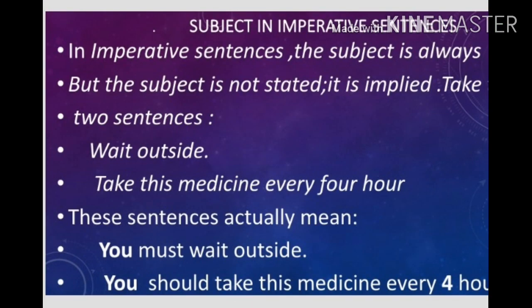Here we can see, in imperative sentences, the subject is always you, but it is implied as I told you earlier. Look at these two sentences. The first says, Wait outside. Second, Take this medicine every four hours. These sentences actually mean what? Here, in the first part, you can see that you is not written, but it is implied. Implied means hidden. We can write these sentences as, You must wait outside. You should take this medicine every four hours. It is understood that we're talking about you.